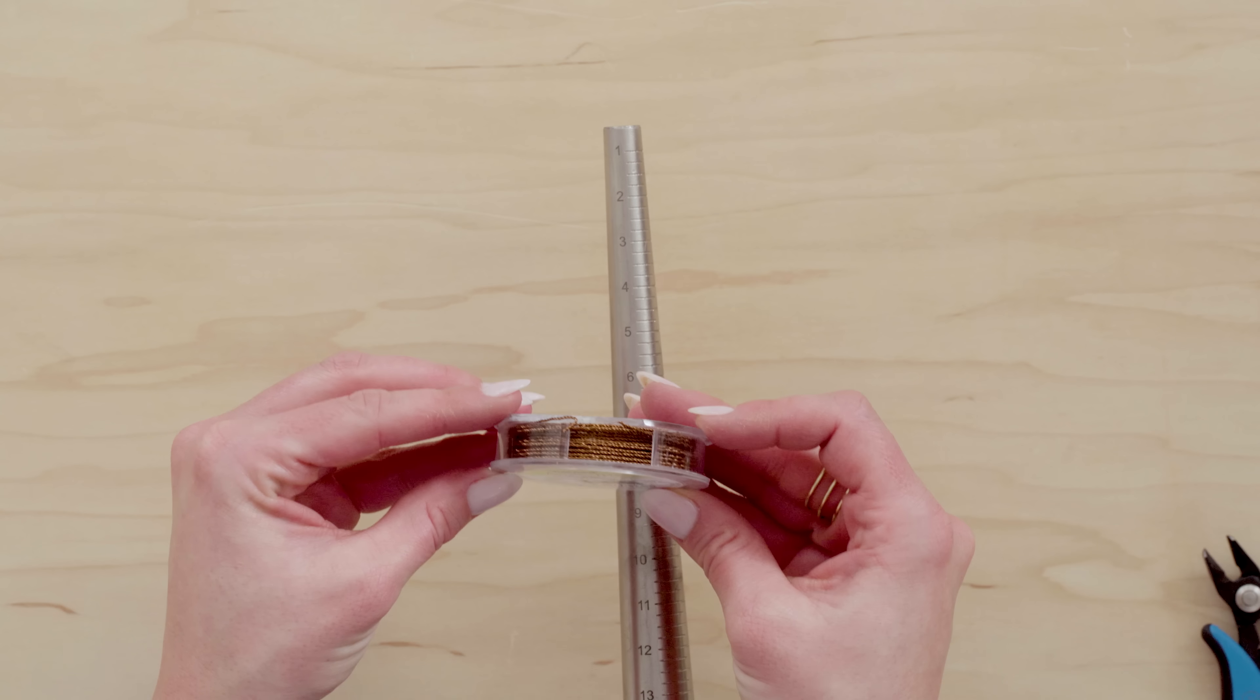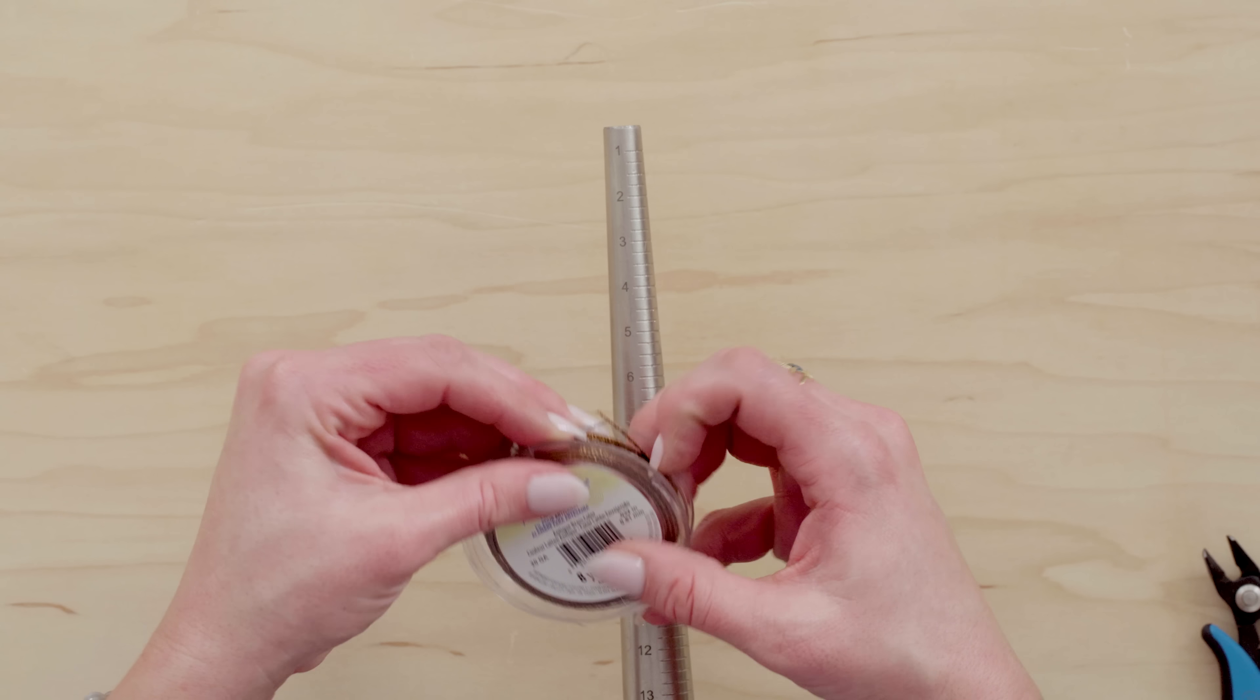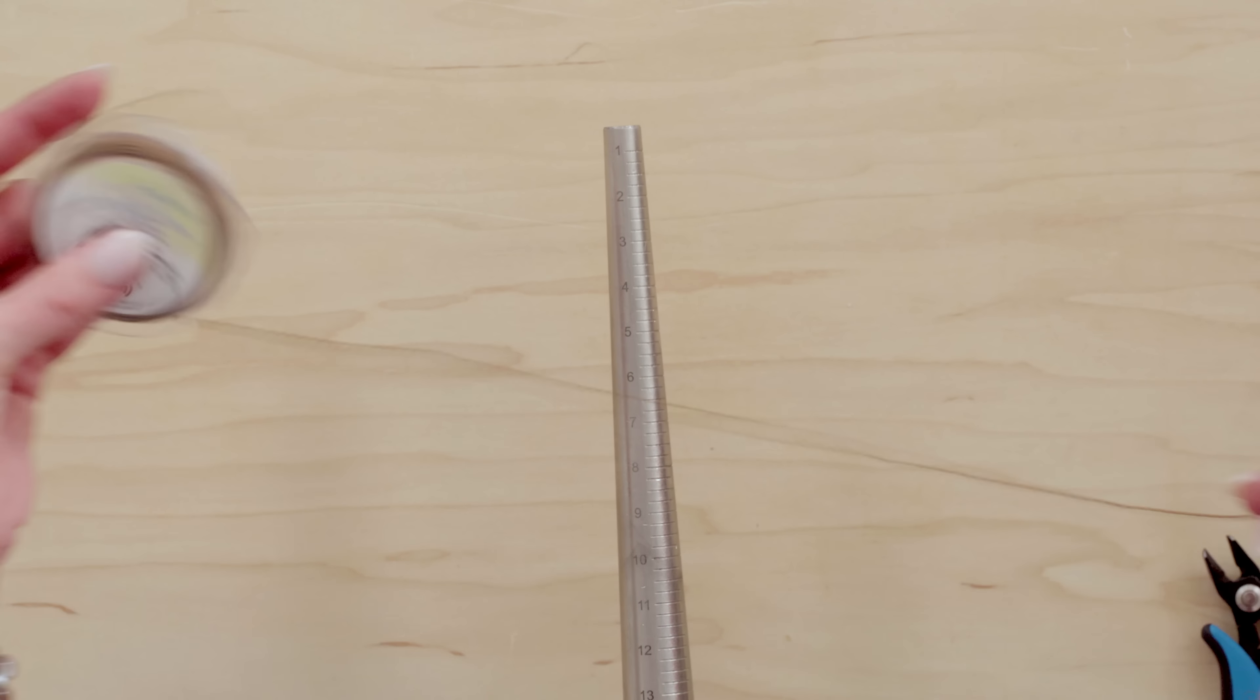And then turn it over and do the other side. So that is how you make that really cute simple version of this ring and now I'm going to show you how to do it with a bead.